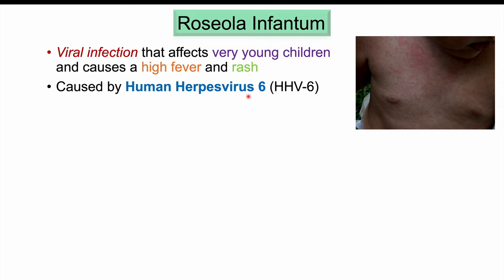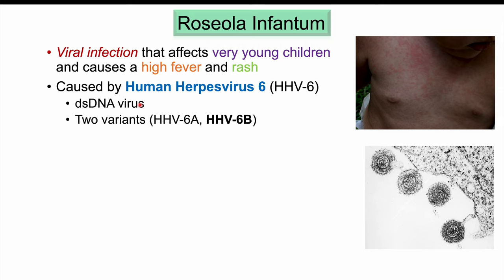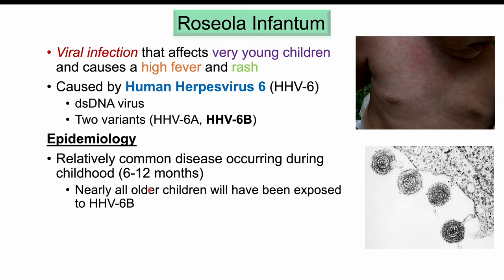This condition is caused by human herpesvirus 6, or HHV6. HHV6 is a double-stranded DNA virus, and there are actually two variants: HHV6A and 6B. HHV6B is the causative agent in roseola infantum, and some cases will involve HHV7 as a potential cause, but most cases will be HHV6B. This is a relatively common disease occurring during childhood, mostly in young infants between the ages of 6 to 12 months.